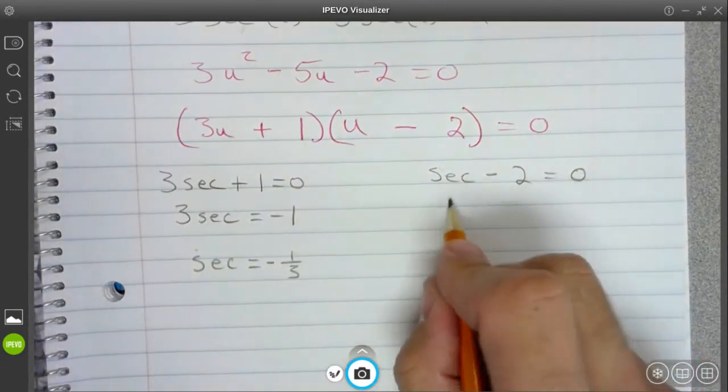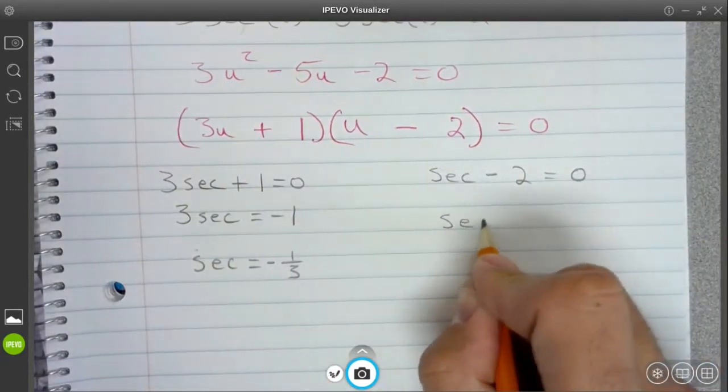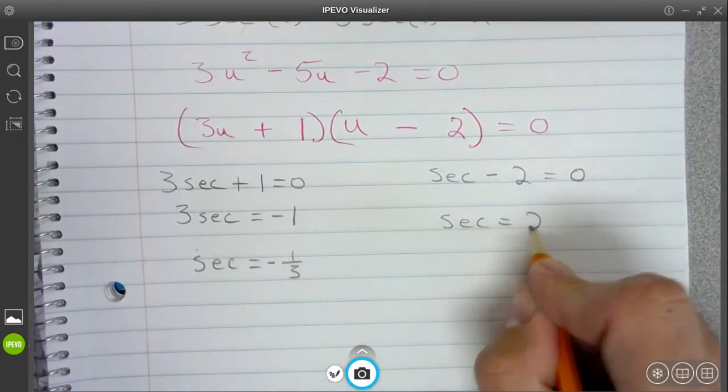For this one, I'll plus 2 on both sides. I get secant is equal to positive 2.